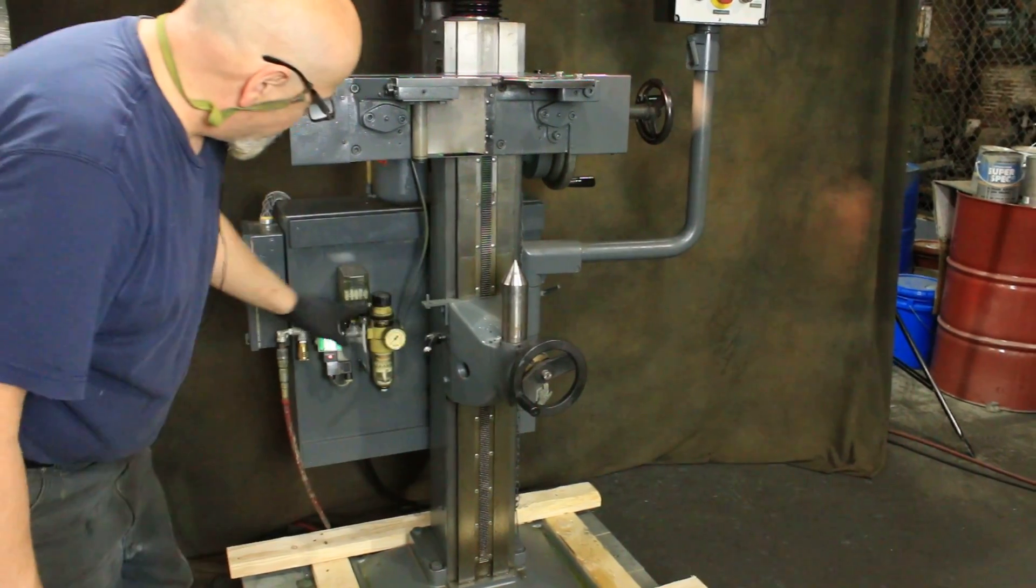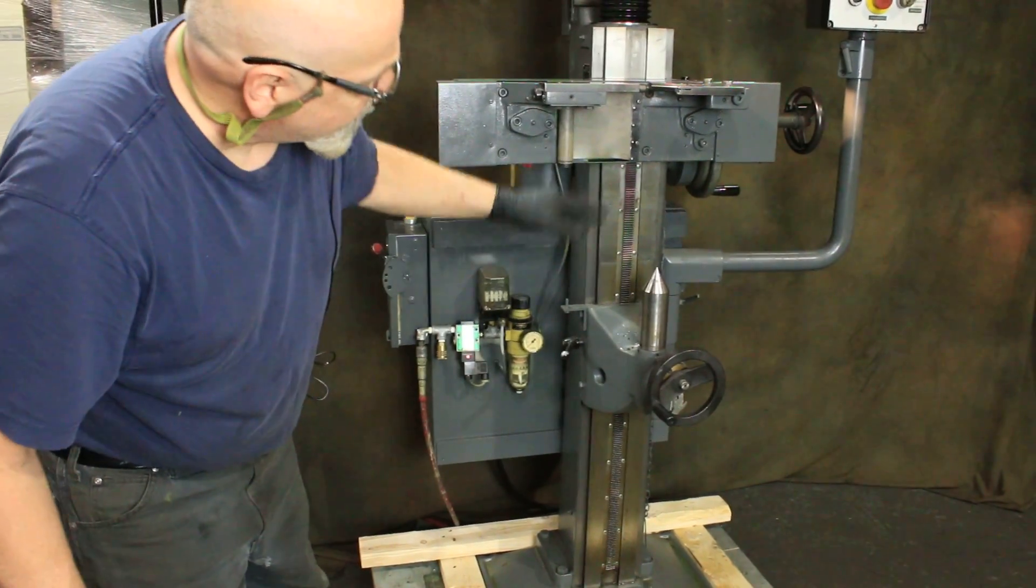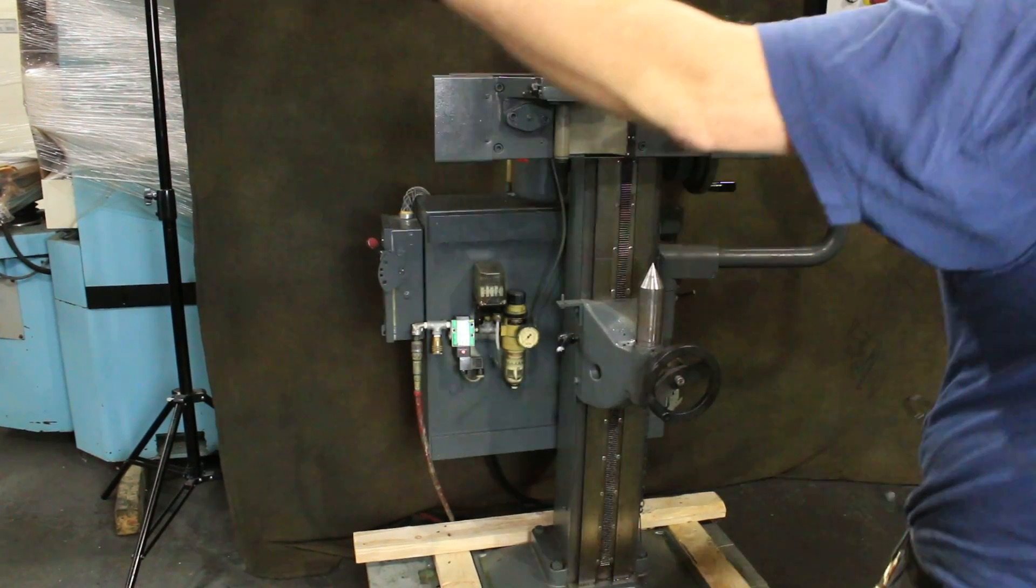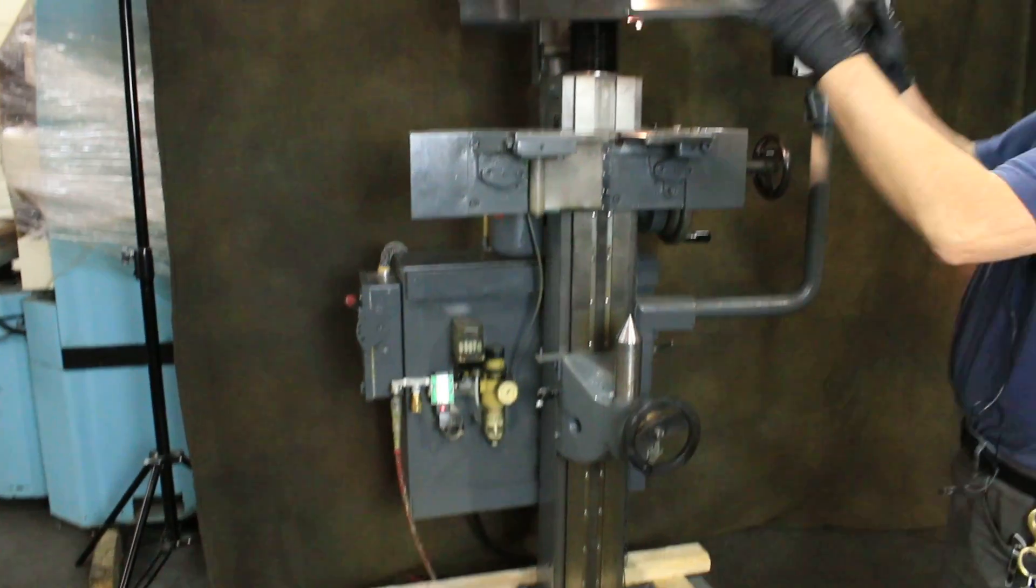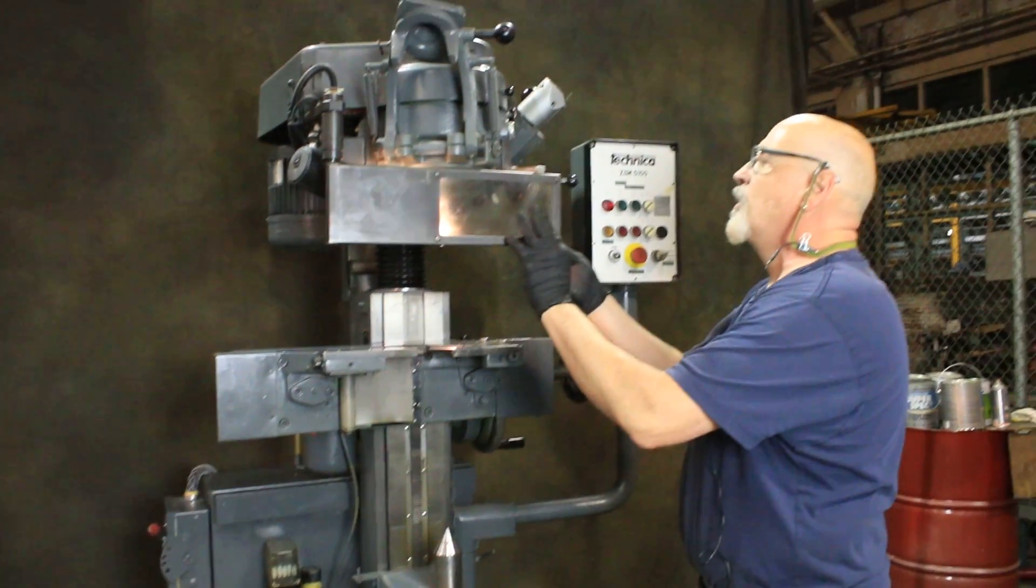The spindle itself has an oil mist lubricant to keep it lubricated. This is a special guard that goes over it that I have to close in order to turn it on.